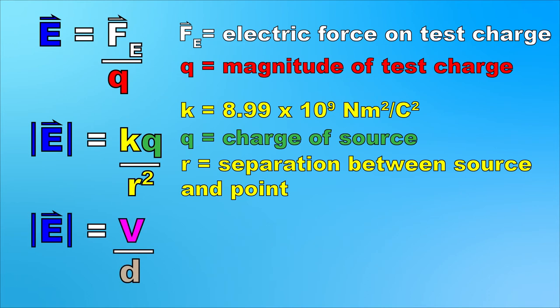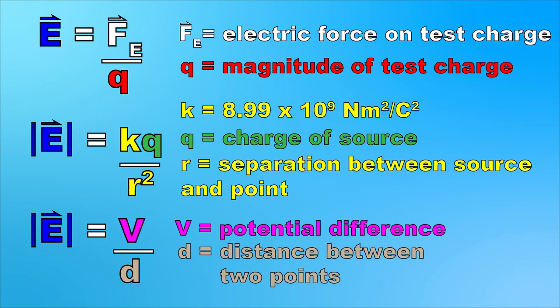The third formula only applies to uniform electric fields. The absolute value of the electric field strength equals the electric potential difference divided by d, where V is the electric potential difference between any two points inside of the parallel plates, and d is the distance between those two points in meters. This formula only applies in these uniform electric fields.